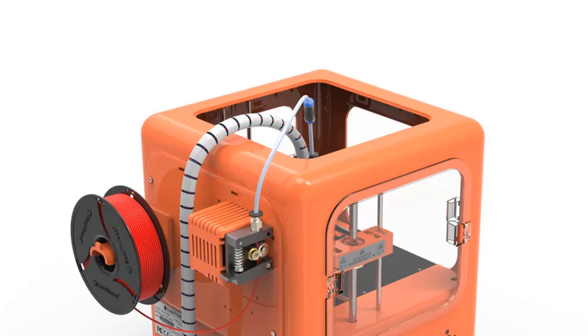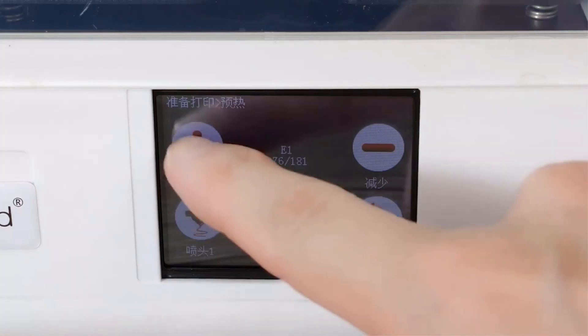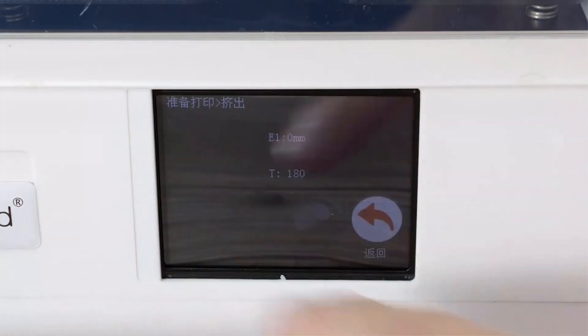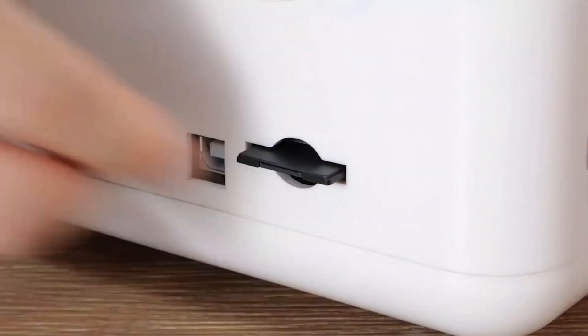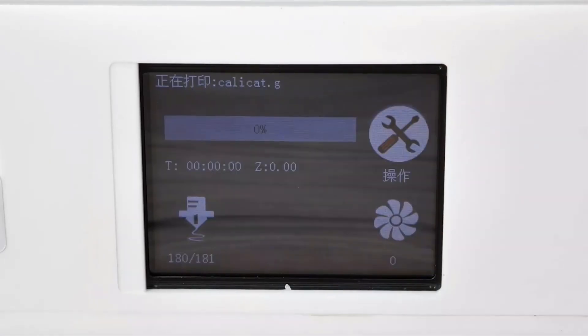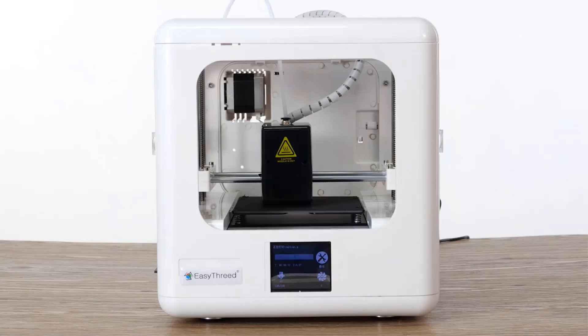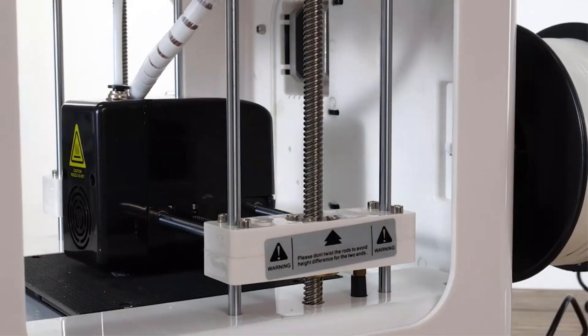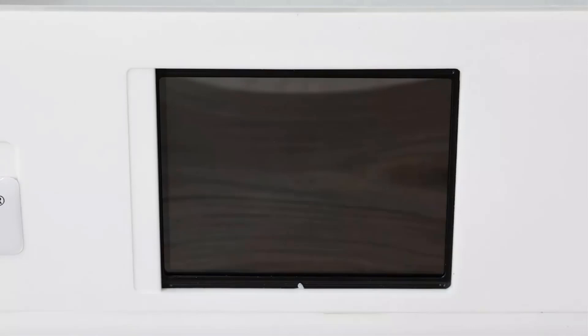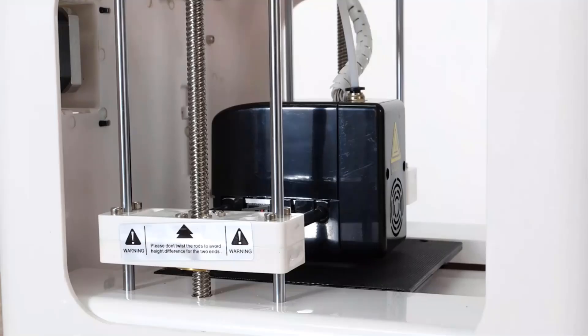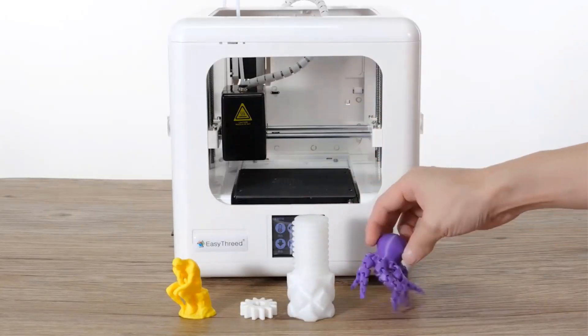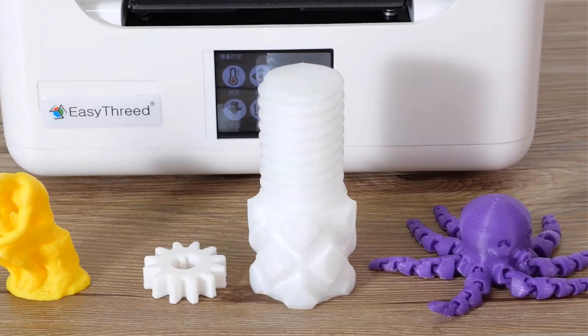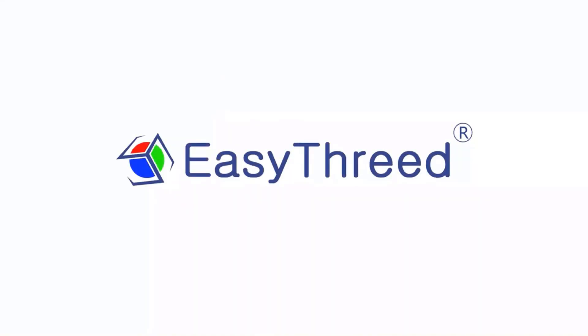Although it does not have an automatic bed leveling feature or a heated bed, the DORA printer is equipped with a removable building platform for easy print removal. With industry certifications including CE, FCC, and ROHS, this FDM printer from EZ3D ensures quality and reliability. The printer is supported on various operating systems and offers connectivity options via SD card and USB cable. The after-sales service includes a 12-month warranty period and professional technical support. Overall, the EZ3D DORA 3D printer provides a convenient and efficient 3D printing experience for users of all levels.